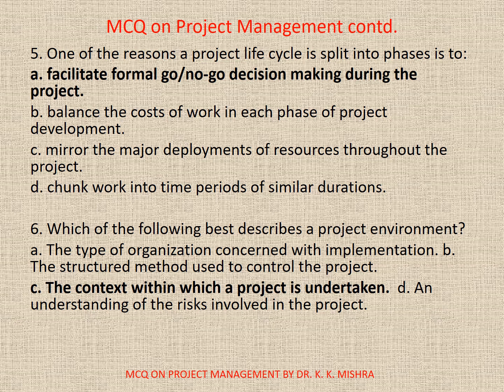Question 5: One of the reasons a project life cycle is split into phases is — Options are: A. Facilitate formal go or no-go decision making during the project; B. Balance the costs of work in each phase of the project development; C. Mirror the major deployments of resources throughout the project; D. Chunk work into time periods of similar durations. Correct option is A: Facilitate formal go or no-go decision making during the project. Question 6: Which of the following best describes a project environment? Options: A. The type of organization concerned with implementation; B. The structured method used to control the project; C. The context within which a project is undertaken; D. An understanding of the risks involved in the project. Correct option is C: The context within which a project is undertaken.